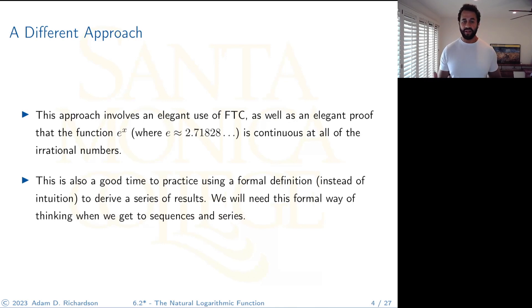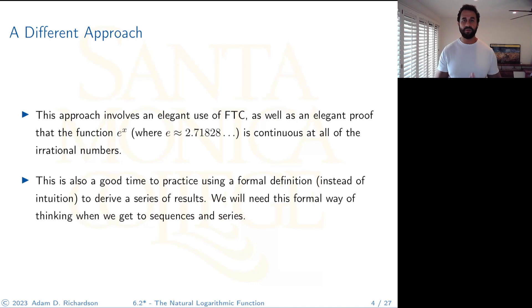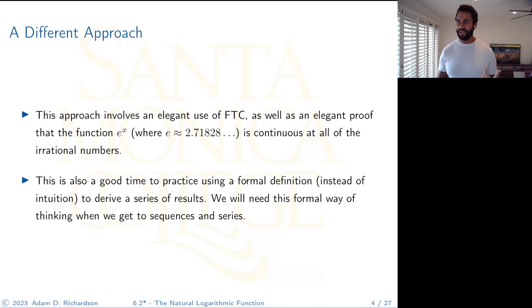This approach provides an elegant proof that e to the x is continuous at all of the irrational numbers, where e is that irrational number approximately 2.71828. This is also a good time to practice using a formal definition instead of just intuition. Many people say it's intuitive to define the exponential function first, but when building new mathematics you need rigor — and that rigor provides more elegant results. We'll need that formal way of thinking when we get to sequences and series.